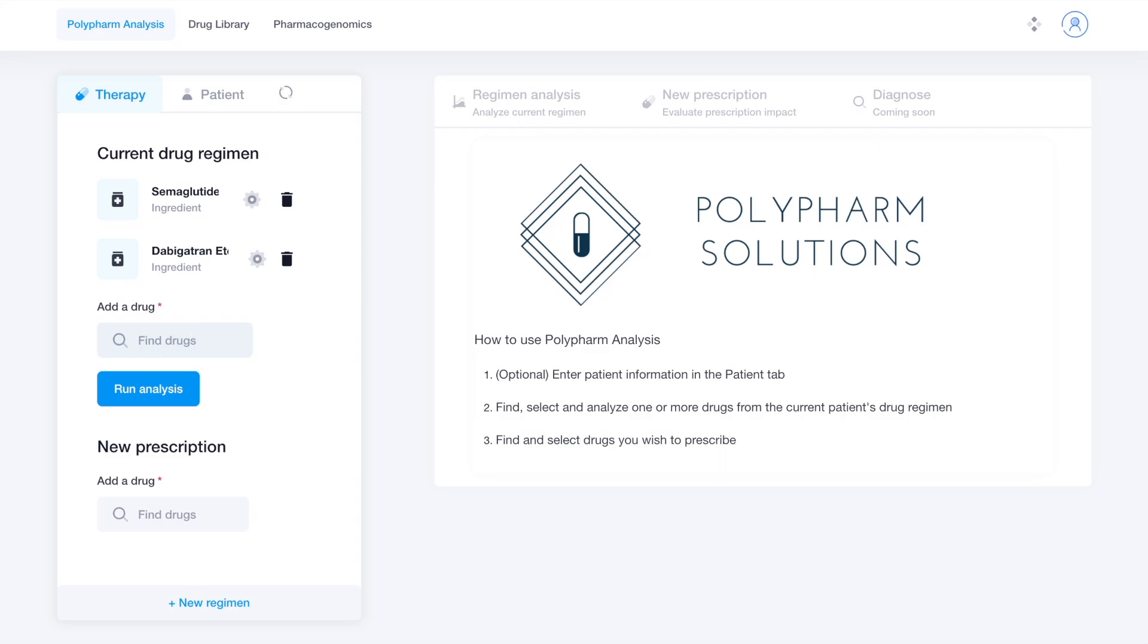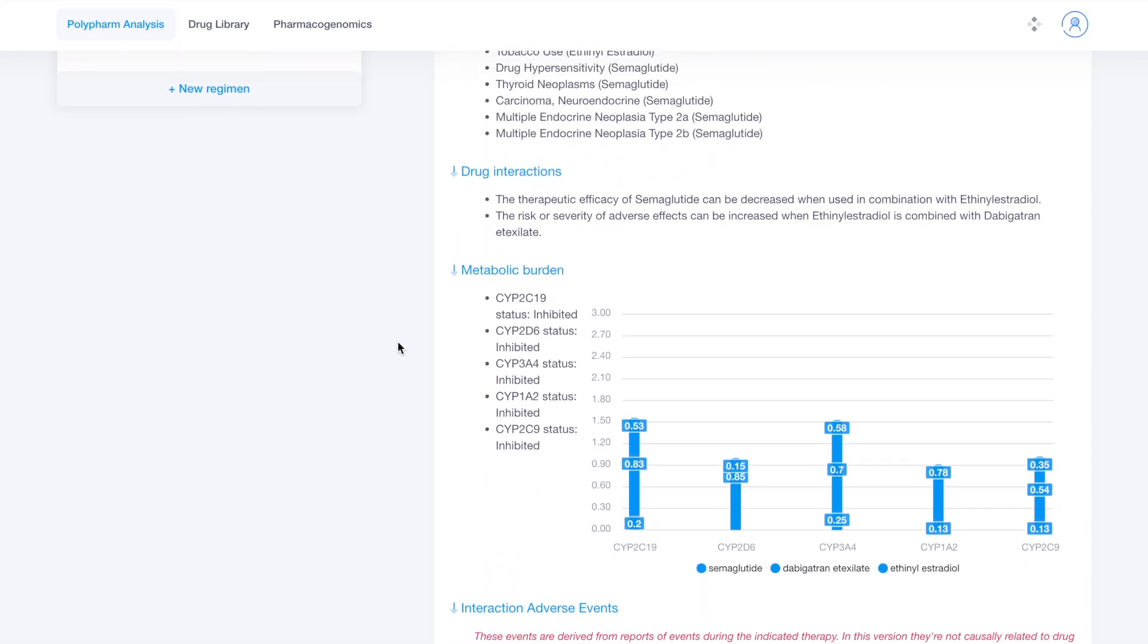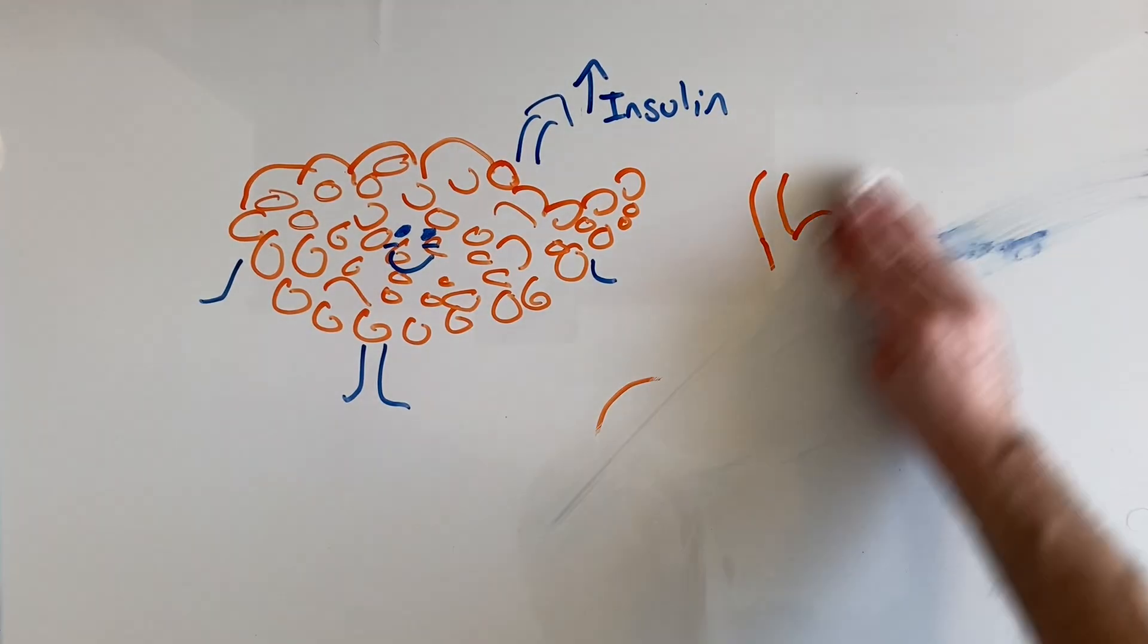I used our software, Polypharm Solutions, to find out this information. You can sign up for free on our website and sign up for the wait list for our mobile app. So today we learned how Ozempic works, its effects on ghrelin and leptin. See you next time.